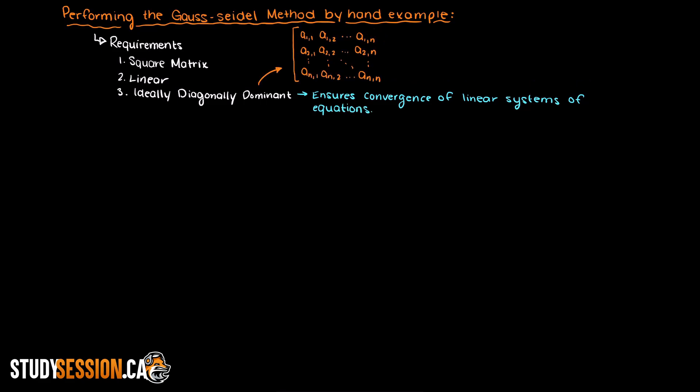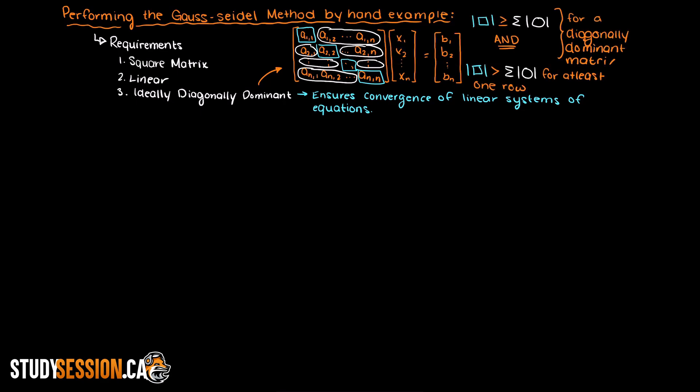Much like the Jacobi iteration, in the Gauss-Seidel method we need a square matrix that is linear and we ideally want it to be diagonally dominant. The reason we want our matrix to be diagonally dominant is that we are guaranteed convergence when using iterative methods on linear systems if our system is diagonally dominant. If our matrix is not diagonally dominant, it doesn't mean that our matrix won't converge, it just means that either the matrix has no unique solution or we need a better starting guess for our variables so that the matrix will converge.